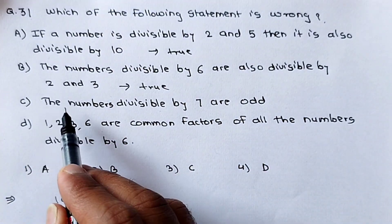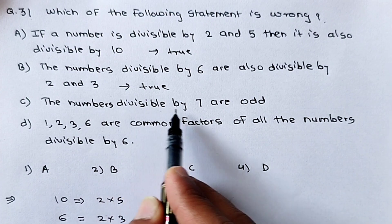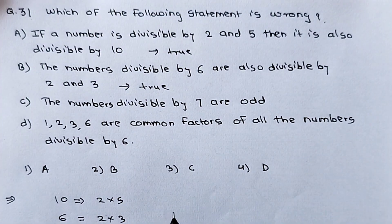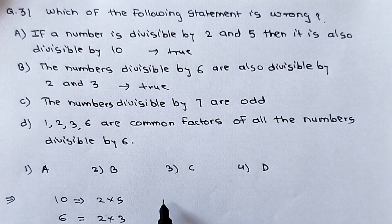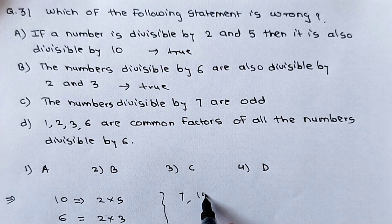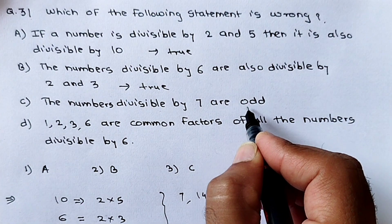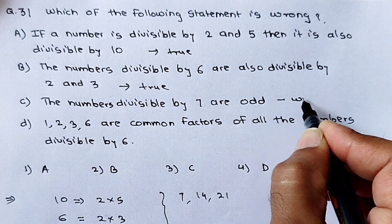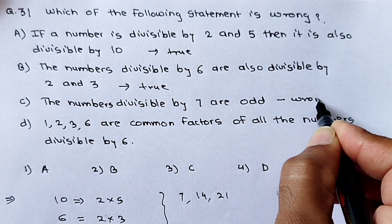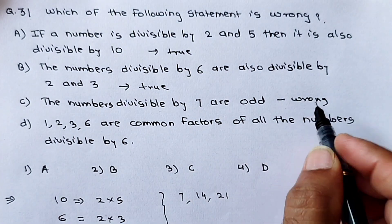Now see the third statement: the numbers divisible by 7 are all odd. If we take the table of 7, we can easily find 7, 14, 21. Here 14 is an even number. So this statement is wrong — third statement is wrong.